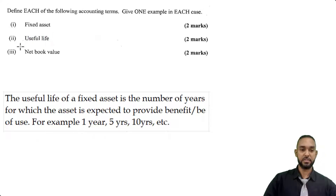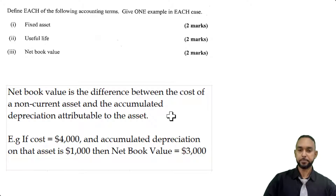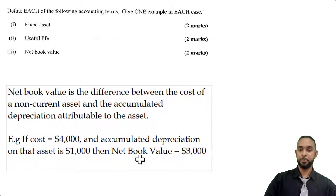The third item they want us to define is net book value. The net book value of a non-current asset is the difference between the cost of the non-current asset and the accumulated depreciation attributable to that asset. For example, if the asset costs $4,000 and there is accumulated depreciation of $1,000, then the net book value is $3,000, which is $4,000 minus $1,000.